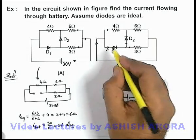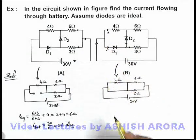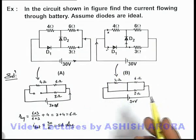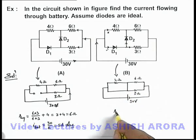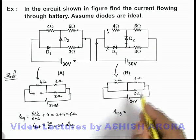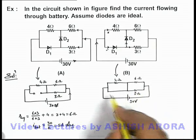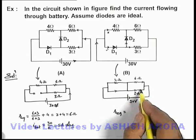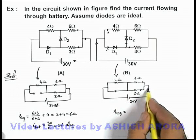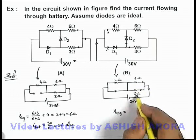So whole of the current will pass through D1 and the current through 4 ohm will be negligible or we can treat it to approximately be equal to zero. So here the total resistance across the battery can be written as only 6 and 3 ohm in parallel, because the current would always be flowing through the low resistance path in the beginning and then it'll be distributed between 6 ohm and 3 ohm resistance.